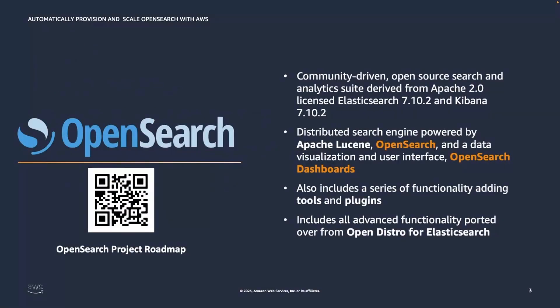OpenSearch is a community-driven open source search and analytics suite derived from Apache 2.0 licensed Elasticsearch 7.10.2 and Kibana 7.10.2. The OpenSearch engine is a distributed search engine powered by Apache Lucene, and it provides a data visualization tool to build dashboards and visualizations called OpenSearch Dashboards. OpenSearch also provides tools and plugins for additional functionalities such as anomaly detection, alerting, observability, and more.